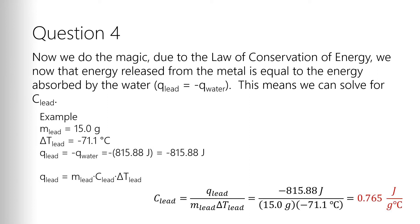So that would put Q on top, minus 815.88 joules over, we're going to say our lead weight's 15 grams, again, this is made up data, times minus 71.1 degrees Celsius. Now note, there's going to be a minus on the top, minus on the bottom, they're going to cancel each other out, and you're going to get a positive value for the constant. That's why the sign is important. If you forgot to put one of those in the right sign, you would end up with a negative constant value, and that's not right. So those two negatives cancel each other.